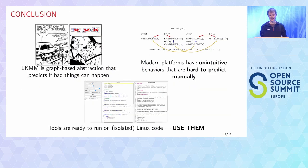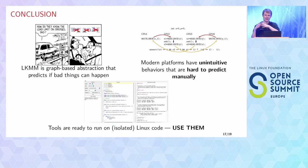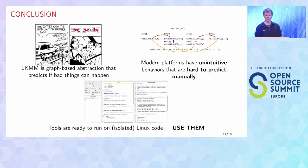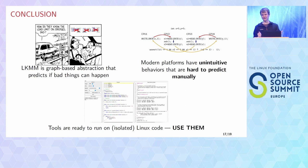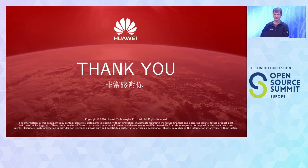That brings me to the conclusion. LKMM is a graph-based abstraction that predicts if bad things can happen. Modern platforms have lots of crazy behaviors that are hard to predict manually, even for experts. The right way to write any kind of concurrent code that doesn't use only locks is to use the tools, because they're now powerful enough to run on real code like the QSpinlock. Thank you so much for your attention.